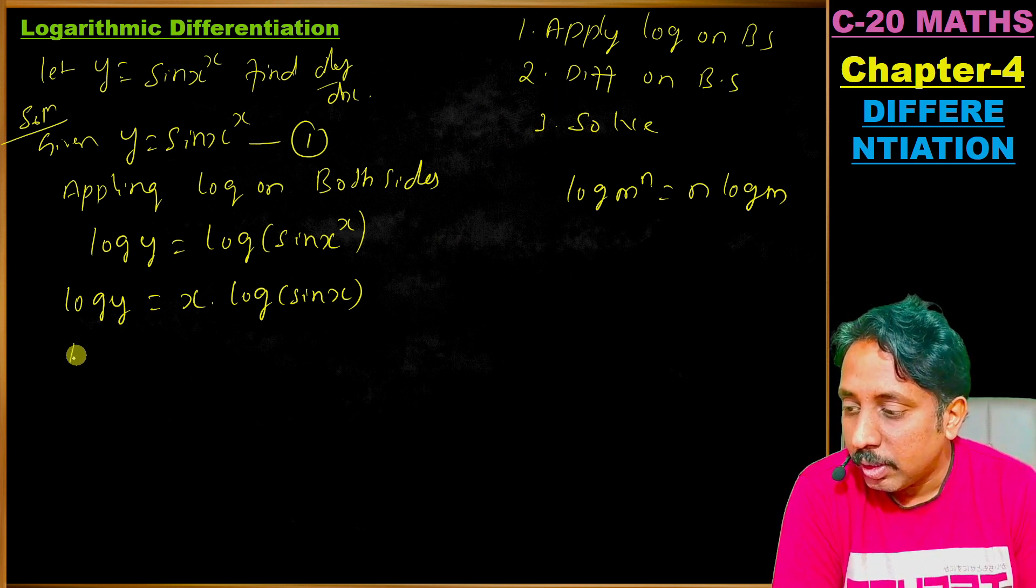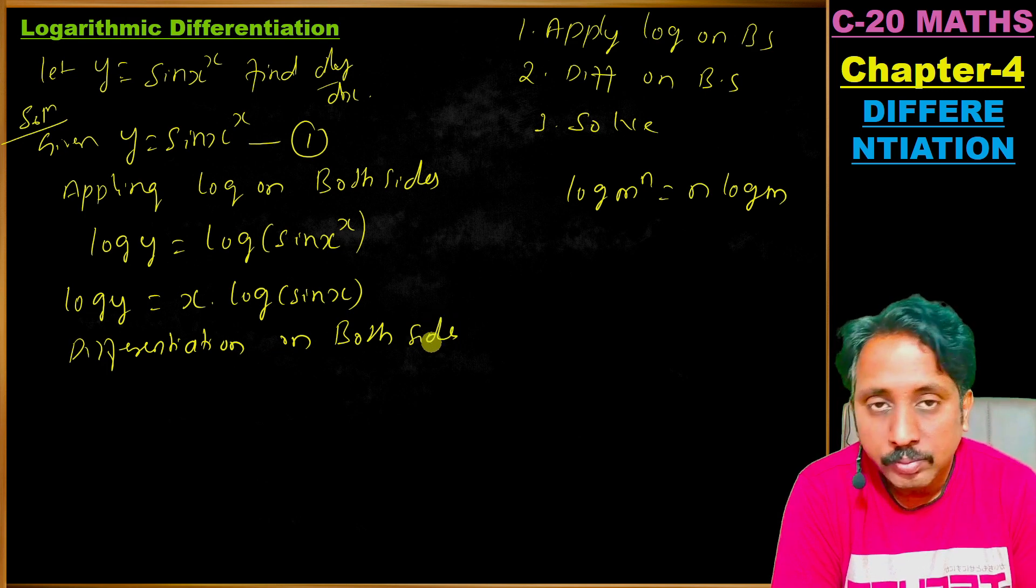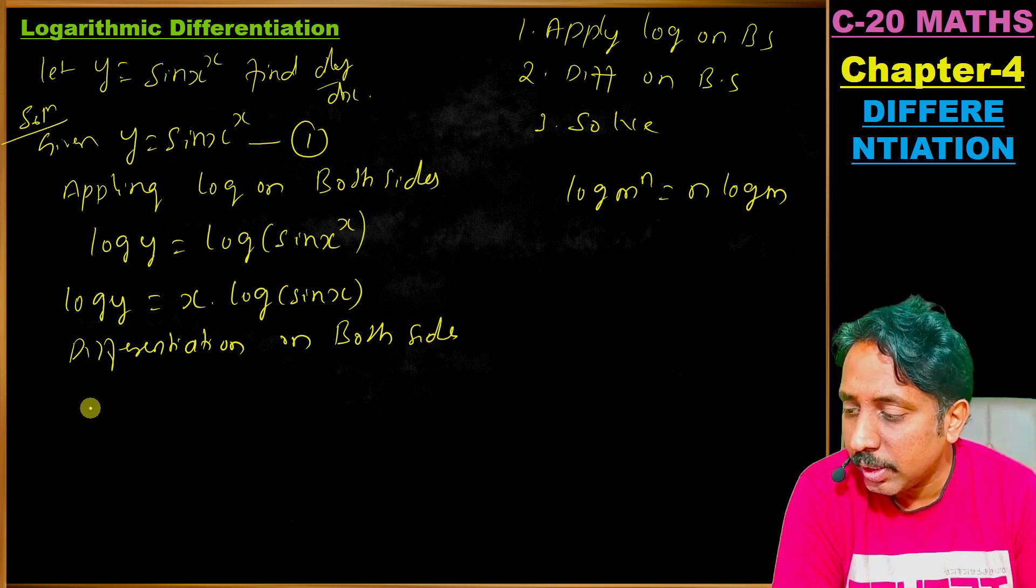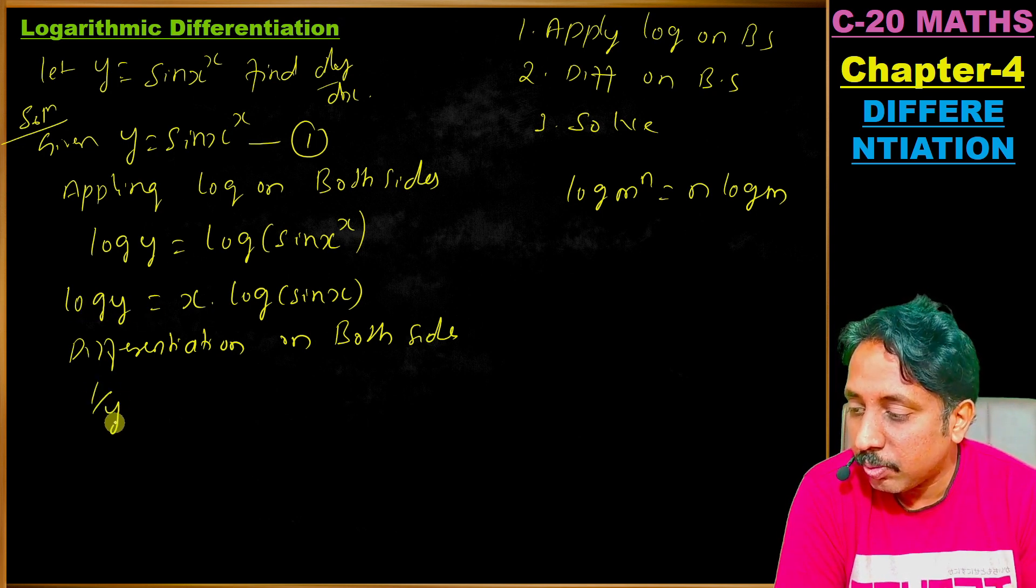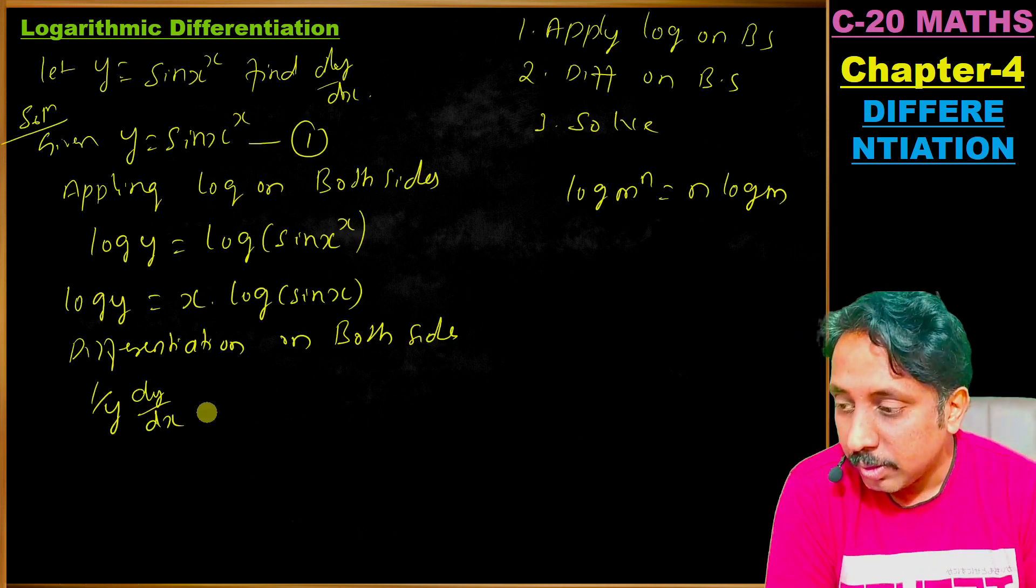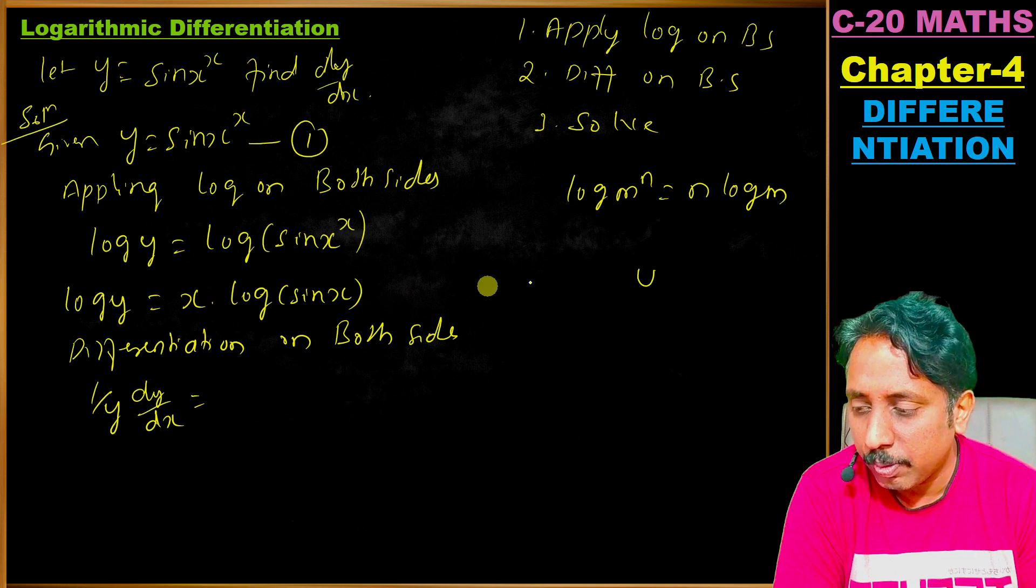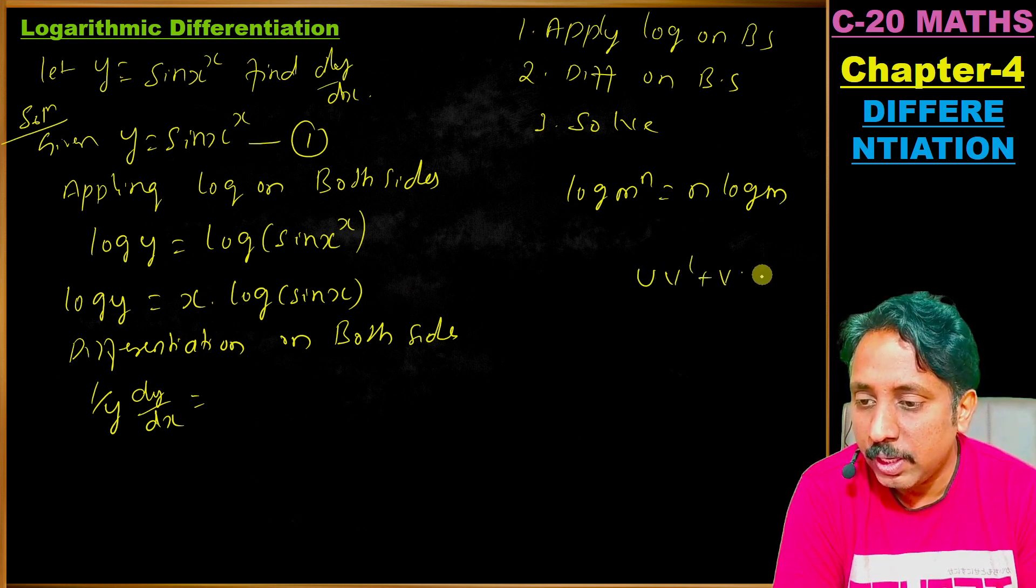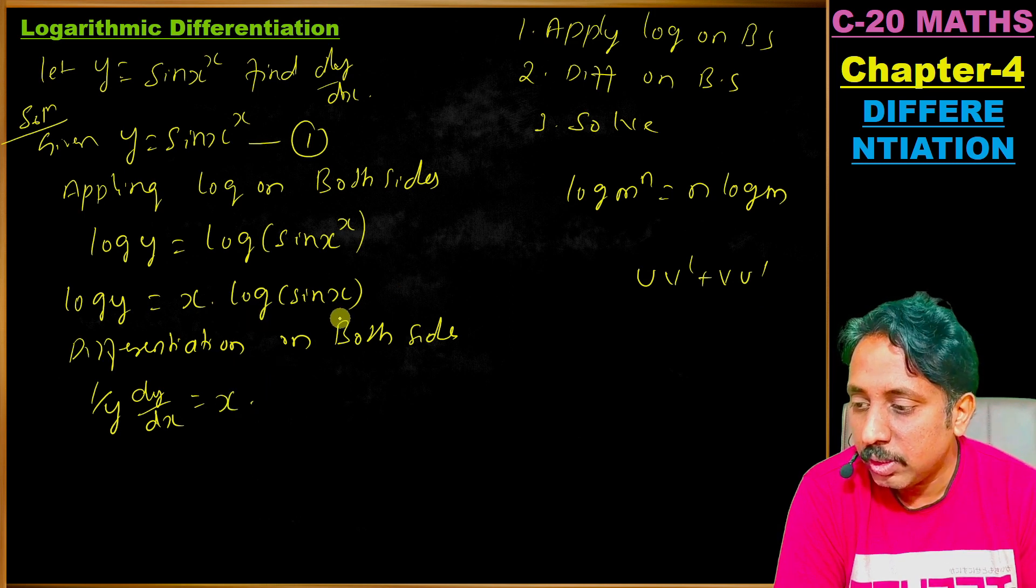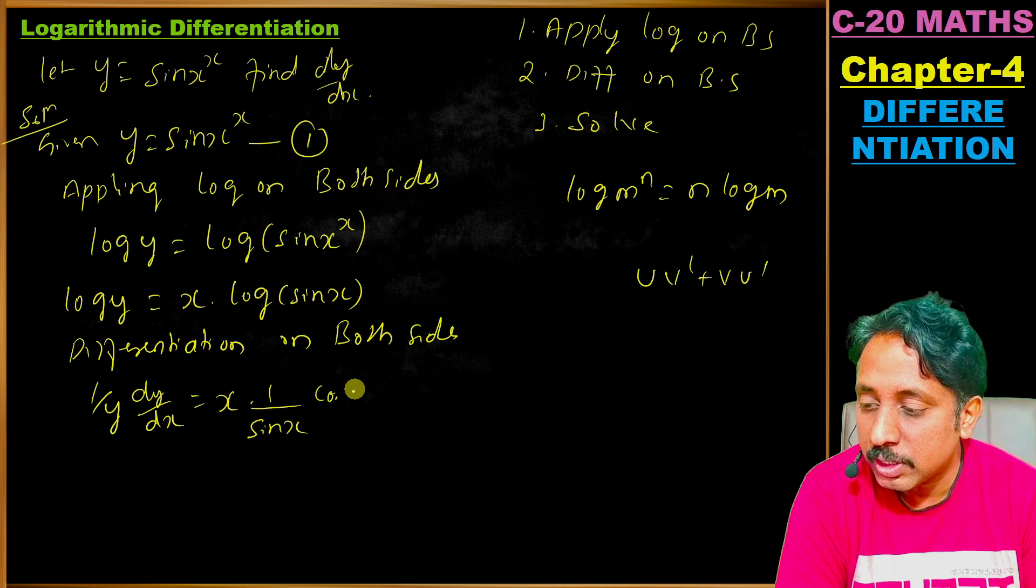Now differentiating on both sides: log y differentiates to 1 by y times dy by dx. On the right side, we apply product rule: x times (cos x divided by sin x) plus log of sin x times 1.